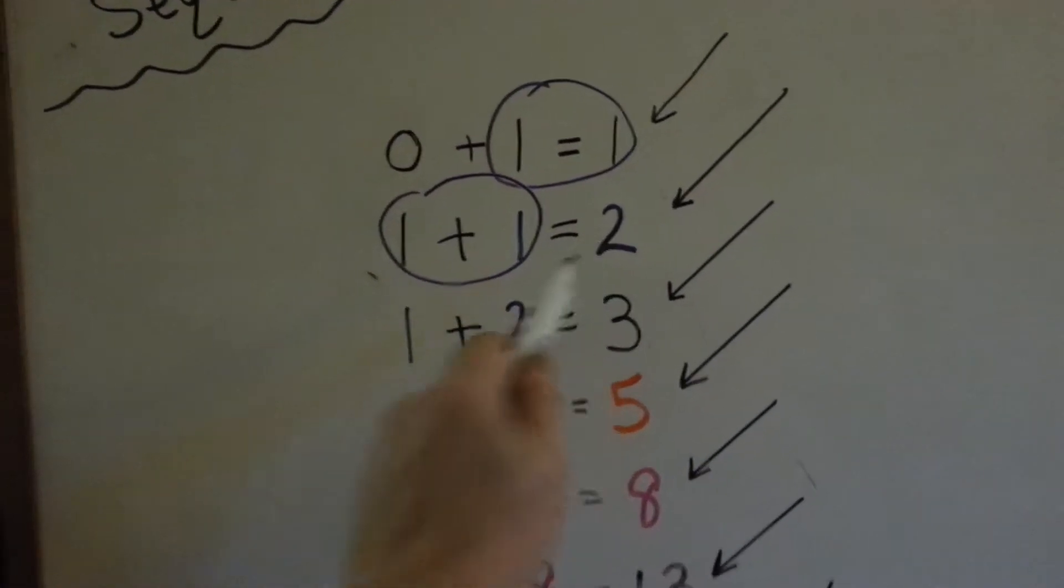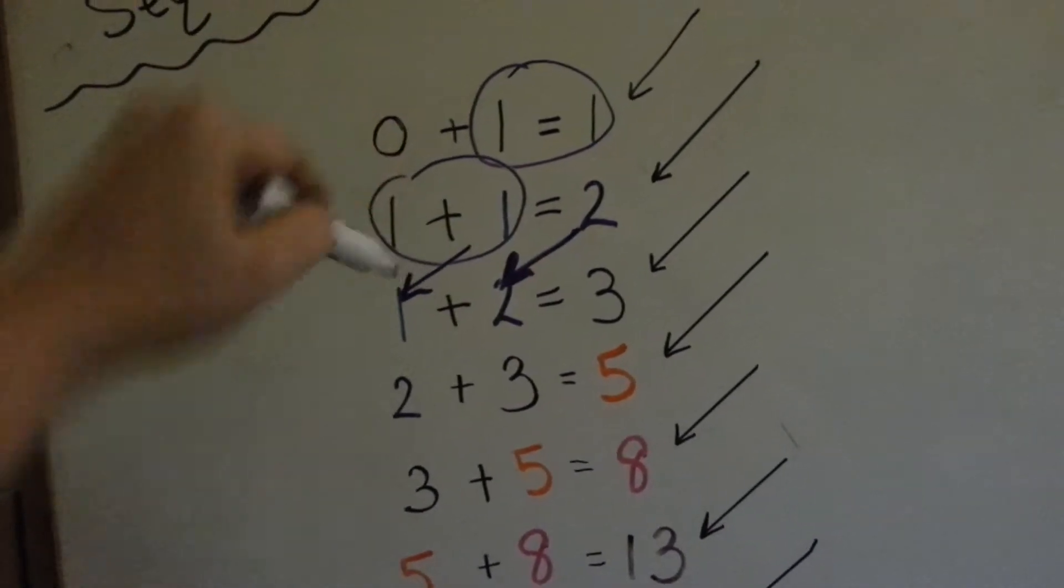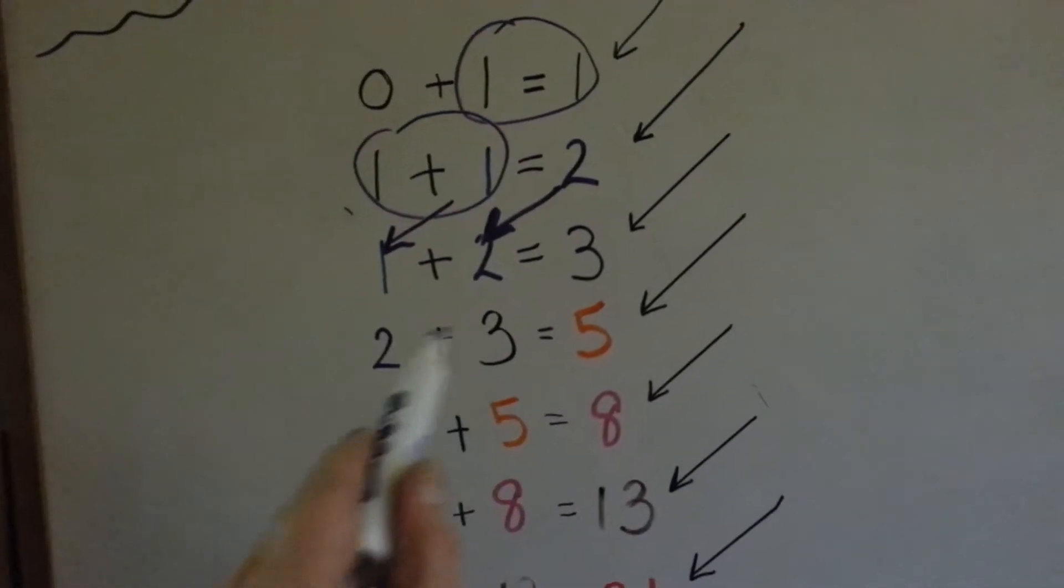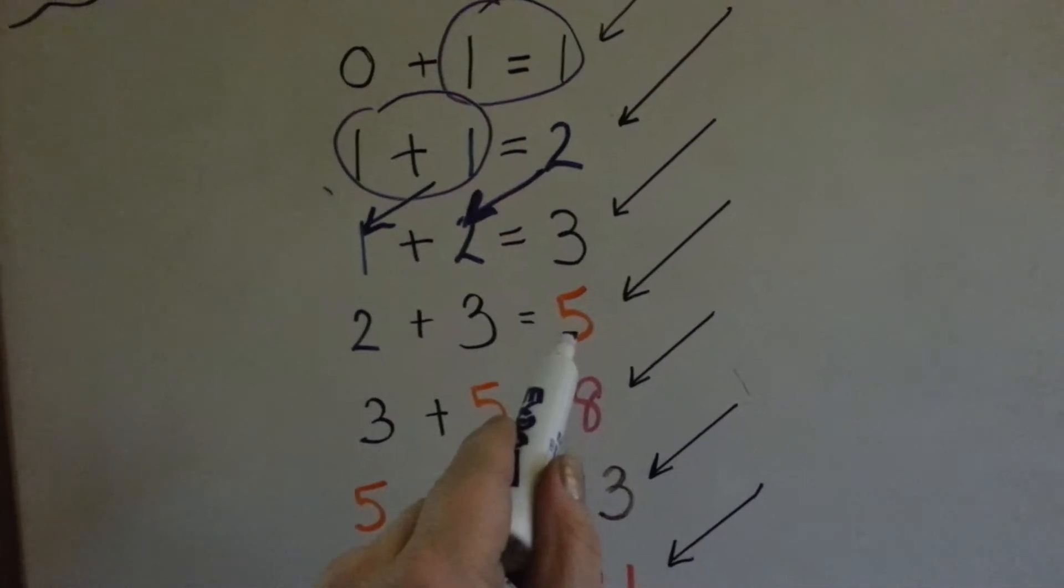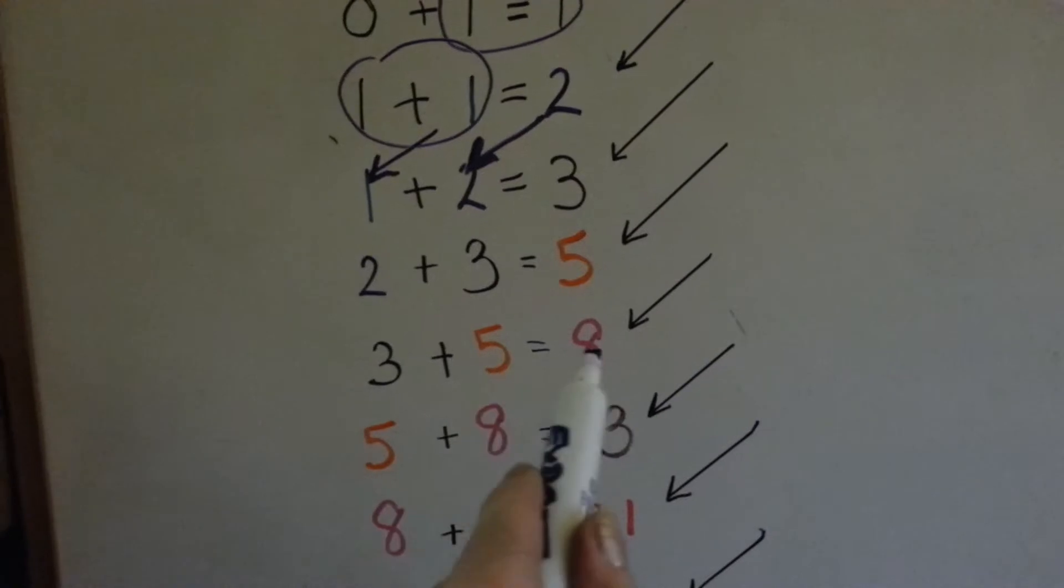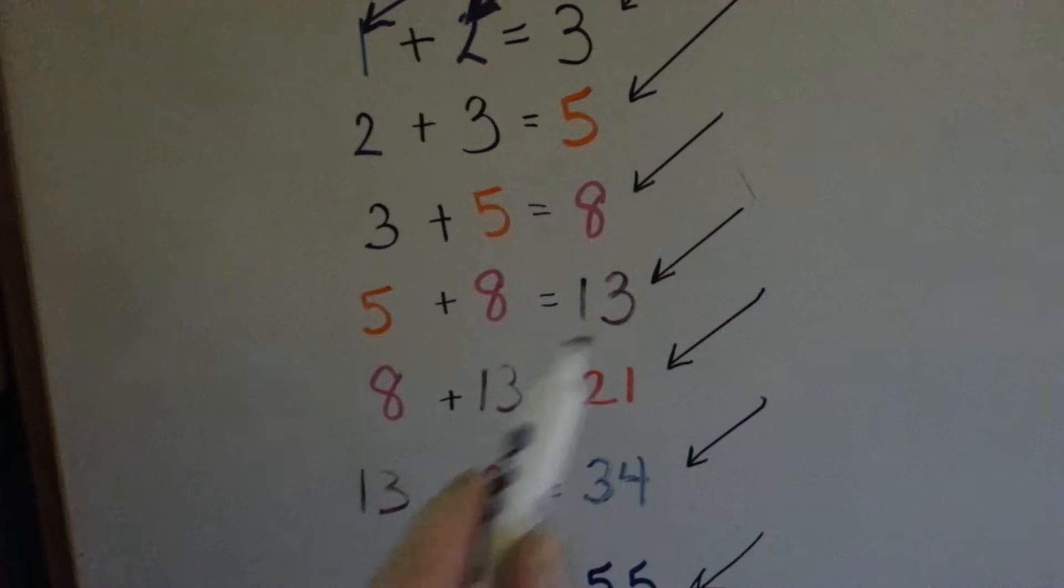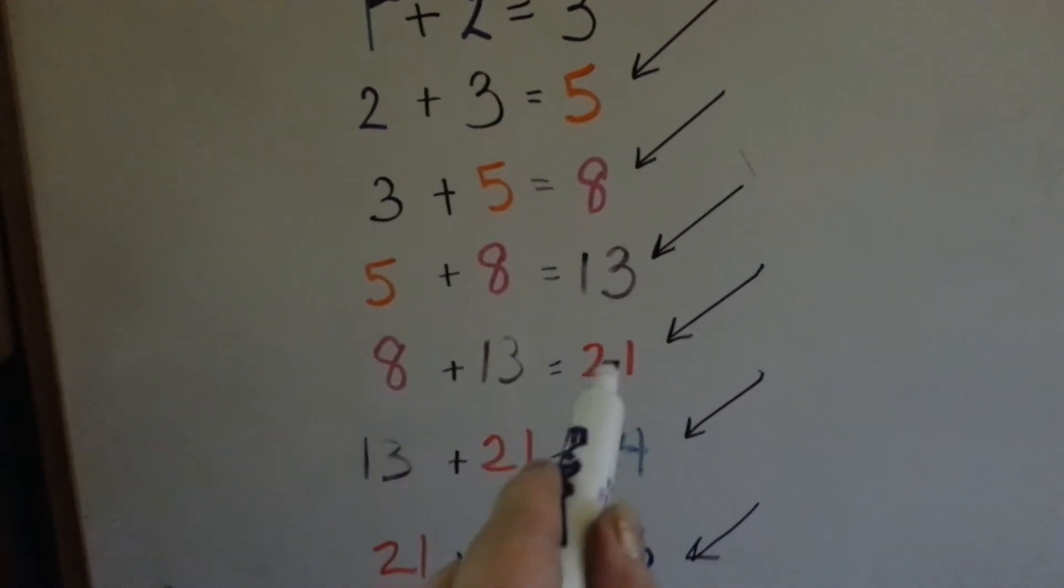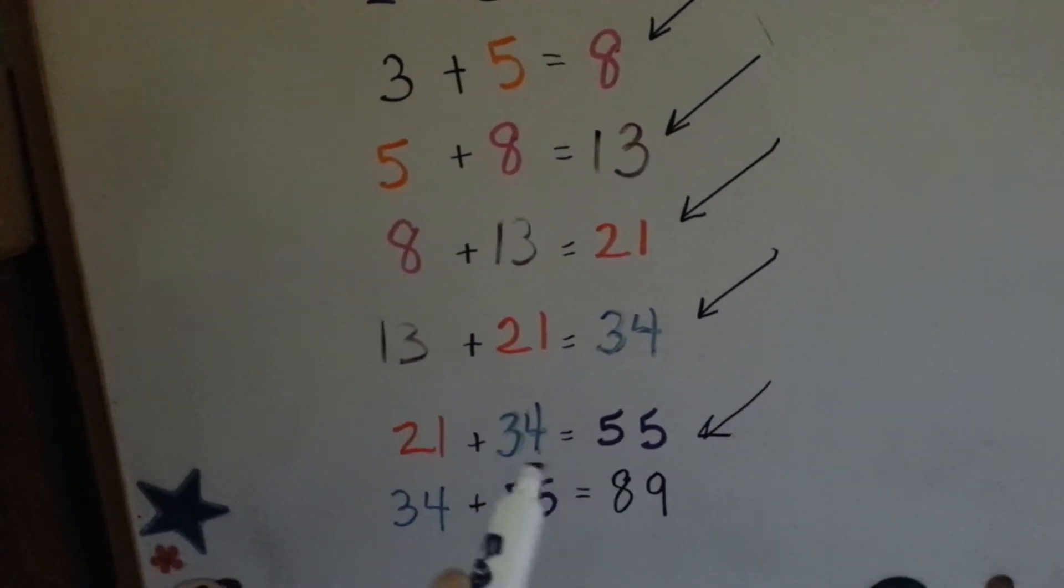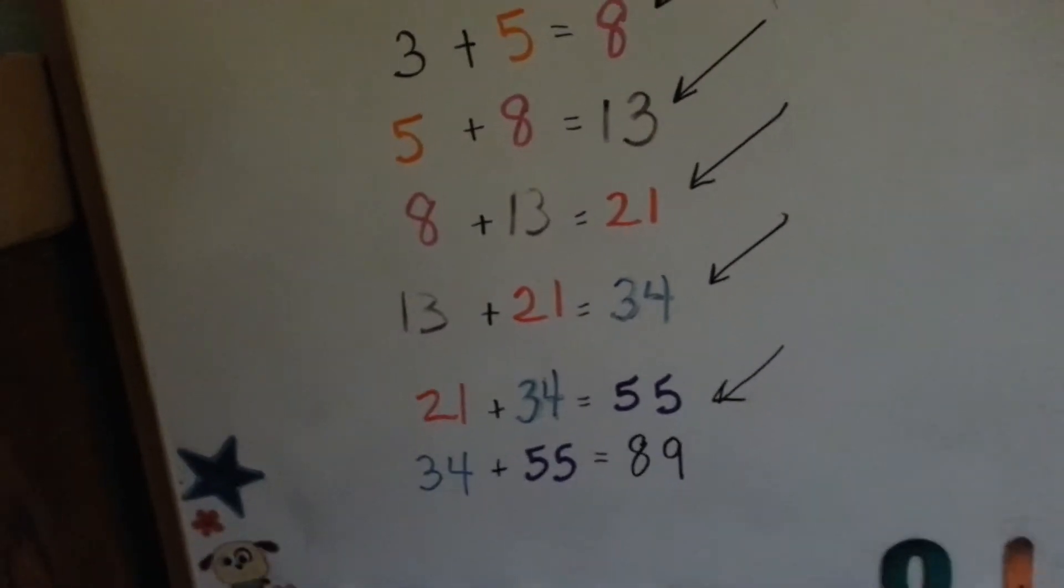Then you take this 1 and this 2 and add them together to get 3. Then you take the 2 and the 3, add them together to get 5. Then you take the 3 and the 5, add them together to get 8. You take the 5 and the 8, add them together to get 13. The 8 and the 13, add them together to get 21. 13 and 21 added together is 34. 21 and 34 is 55. 34 and 55 is 89, and you keep going and going, and that's the Fibonacci sequence.